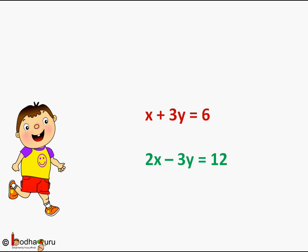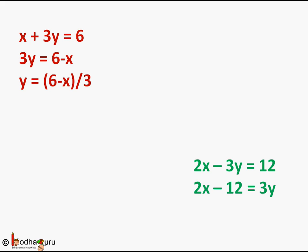So for the first equation x plus 3y equal to 6, we write it as y equal to 6 minus x by 3. And for the second equation 2x minus 3y equal to 12, which is 2x minus 12 equal to 3y.